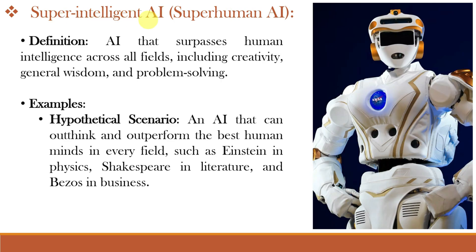Last is super intelligent AI, also called superhuman AI. Superhuman AI refers to AI systems that exceed human capabilities in one or more domains, such as reasoning, problem solving, or decision making. These AI systems will not be bound by human limitations and can potentially surpass human intelligence and performance in specific tasks or areas. Super intelligent AI is a hypothetical scenario where an AI can out-think and outperform the best human minds in every field.